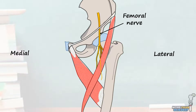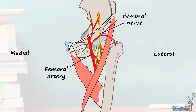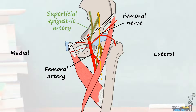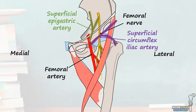The saphenous nerve follows the femoral artery and travels downwards to eventually meet up with the great saphenous vein in the leg. The next structure is the femoral artery, which originates from the external iliac artery and supplies most of the blood to the lower limb. The femoral artery produces a number of important branches in the femoral triangle, but the main ones to be aware of are the superficial epigastric artery, which travels upwards to supply part of the abdominal wall, the superficial circumflex iliac artery, which supplies the lower abdominal wall, and the deep femoral or profunda femoris artery, which travels downwards into the deep thigh.